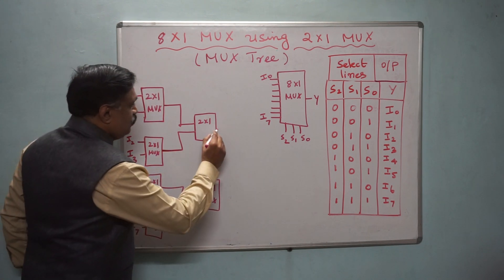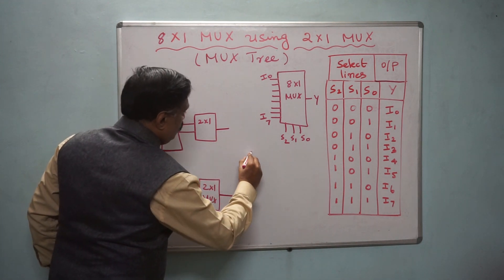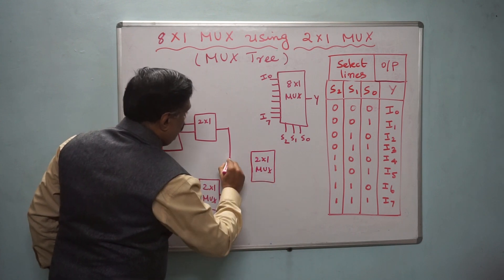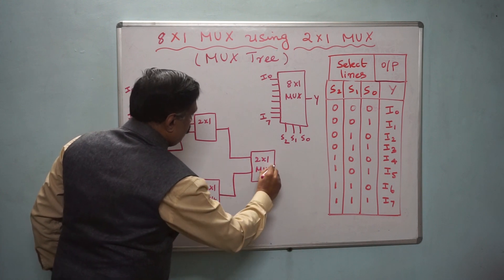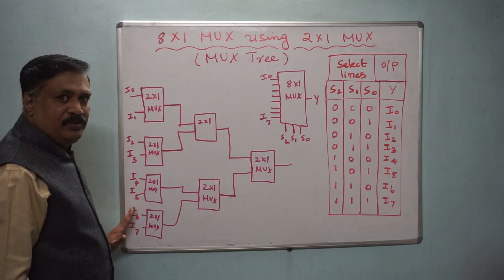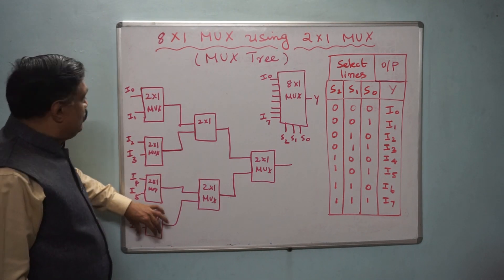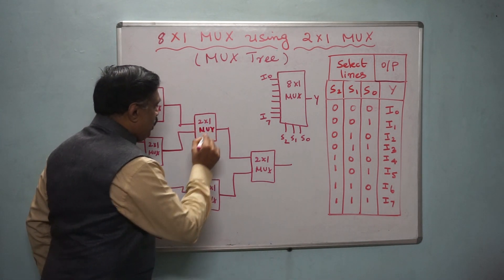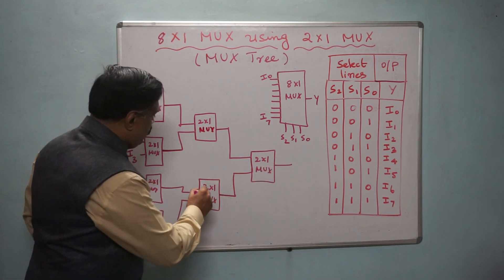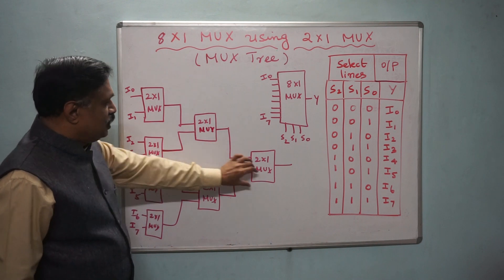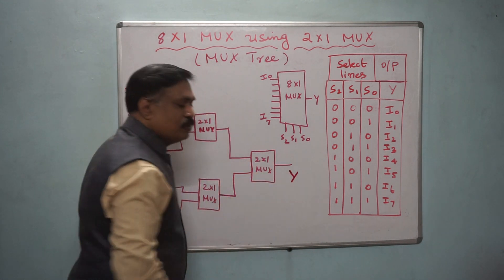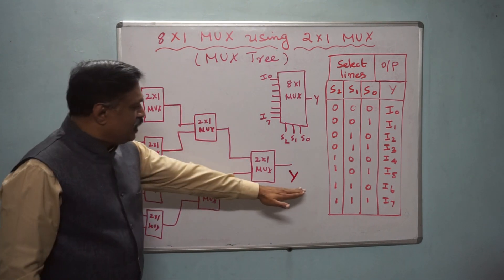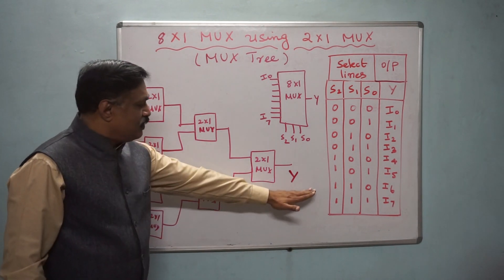Each second-level MUX generates one output. These two outputs are then given to another 2 by 1 MUX at the final level. So 8 inputs are given to the lower-order 2 by 1 MUXes at the first level, their outputs go to the second level 2 by 1 MUXes, and those outputs go to the final 2 by 1 MUX. The outputs from the first and second levels are all intermediate outputs, and the final 2 by 1 MUX produces the actual output.